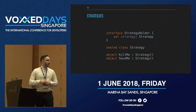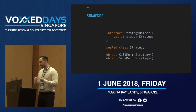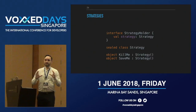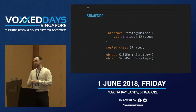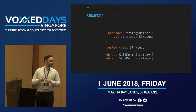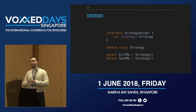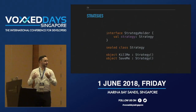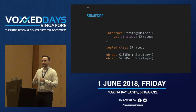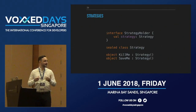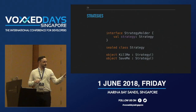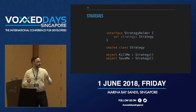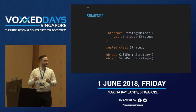To solve this, we introduce strategies — metadata that tells us how to behave when a duplicate job is found. We add one more simple interface and a strategy class using Kotlin's sealed class, which is similar to an enum but more powerful. Enums have restrictions — you can't extend a class using an enum — but with a sealed class you can. We use the object notation so KillMe and SaveMe will be singletons representing the different strategies.